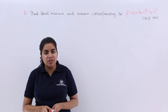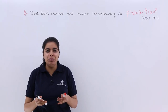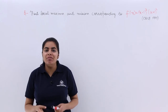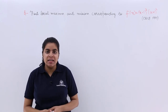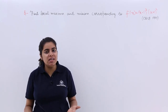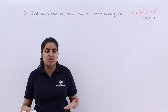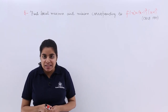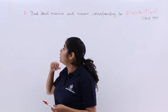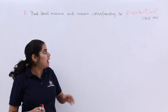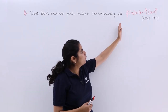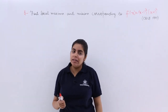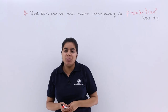In this video, let's see the first numerical problem based on maxima minima derivative test. The question says: find local maxima and minima corresponding to f(x) = (x-1)³ multiplied by (x+1)².